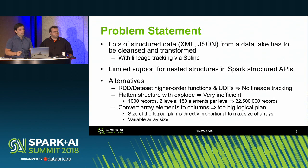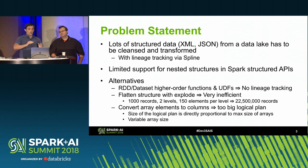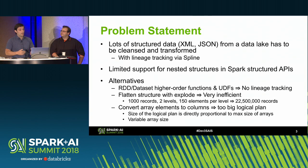With our Spline lineage tracking tool, we decided to harvest lineage information from Spark execution plans. Some colleagues tried to work around this problem using Spark structured APIs — flattening the structure first, then performing operations with regular joins and filters, then changing the schema back to nested. But it turned out to be very inefficient. We also tried converting array elements to dedicated columns, but that caused the Spark logical plan to explode, making it impossible to transform very complex nested schemas.